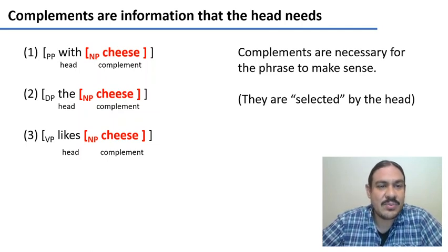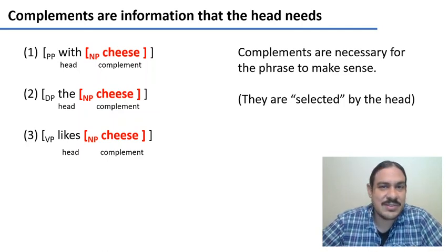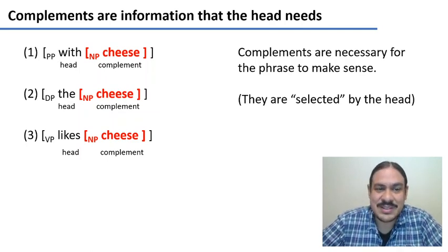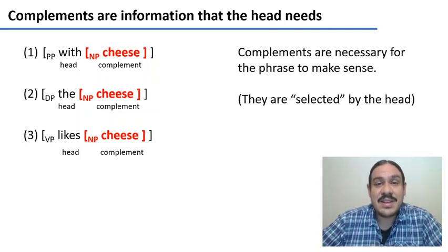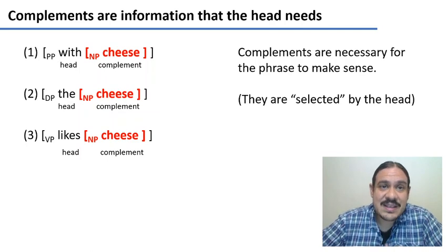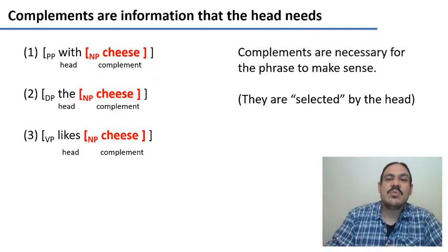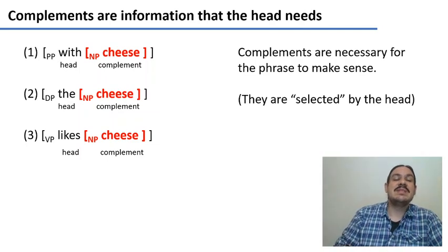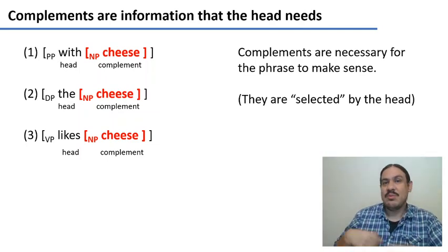In the second one, 'the cheese,' it has a determiner 'the,' so the whole structure is about a determiner. In 'likes cheese,' that structure has a verb, so the whole structure needs to be about the verb. In addition to the head, these phrases have a complement, which is some information that is necessary for the phrase to make sense.